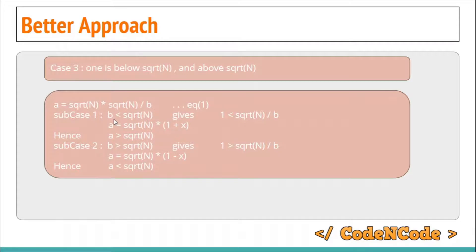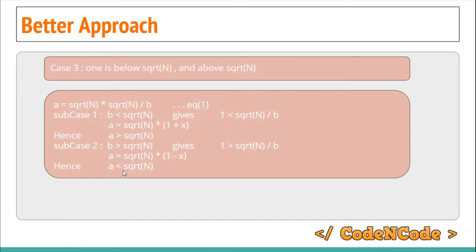So if b is smaller than square root of n, then a comes out to be greater than square root of n. Similarly, if b is greater than square root of n, then square root of n divided by b is smaller than 1, so we write it as 1 minus x. Substituting, a equals square root of n times (1 minus x), which gives a equals square root of n minus x times square root of n, so a is smaller than square root of n. Hence case 3 is proved using direct proof.